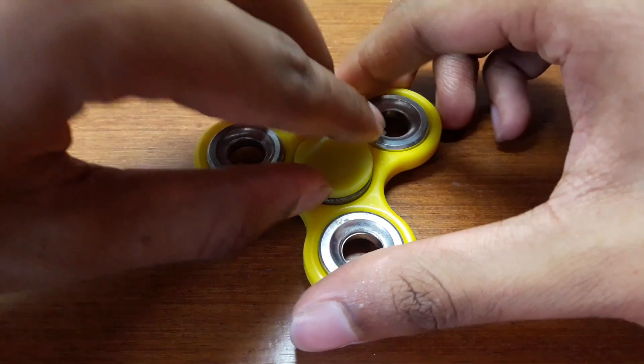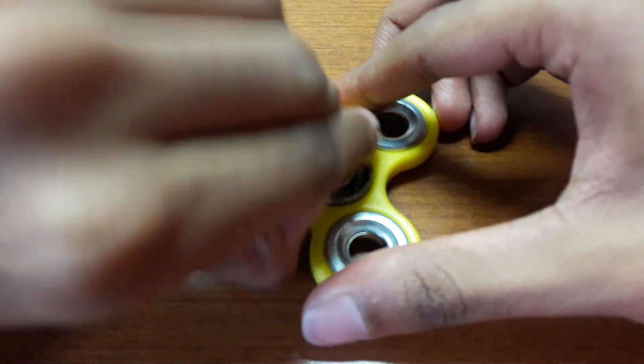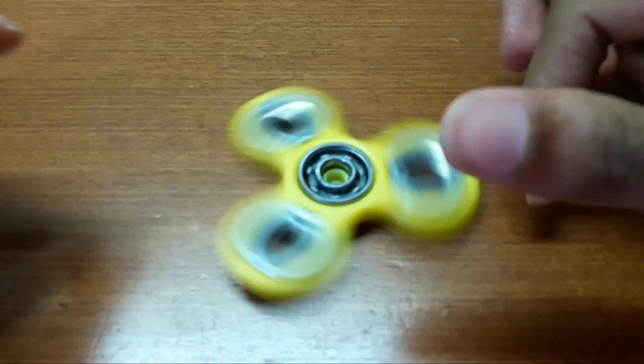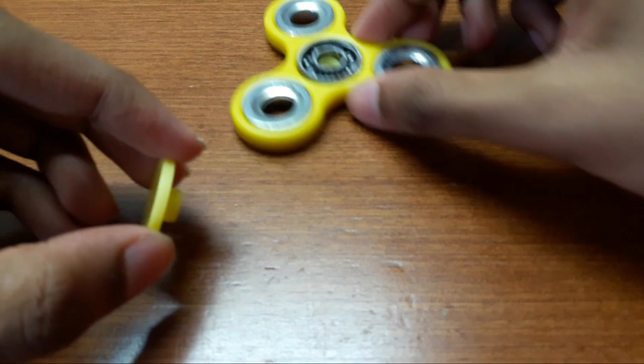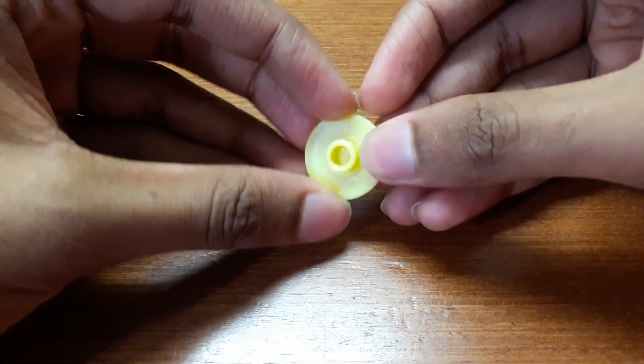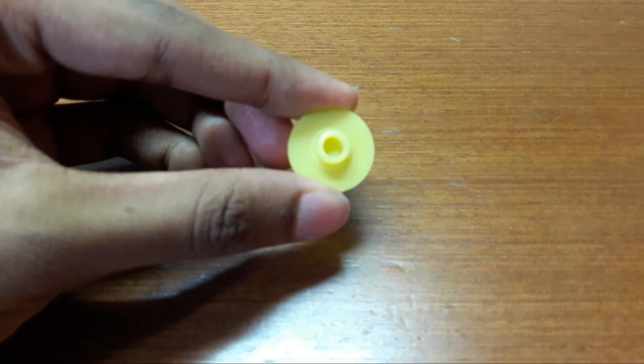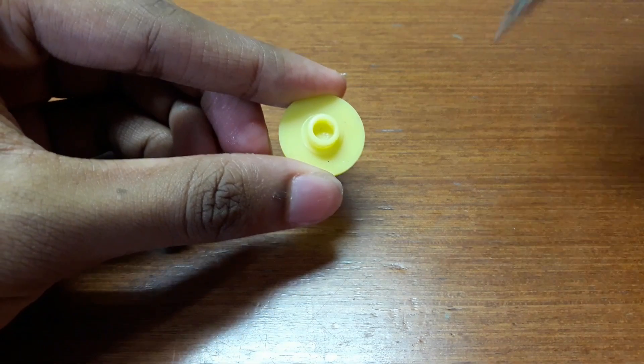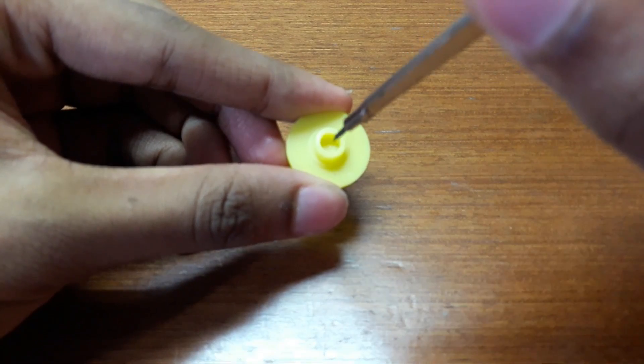Now remove the top cover of the fidget spinner. Now you have to make a hole in the center of this fidget spinner. Use a divider to make a hole in the center.